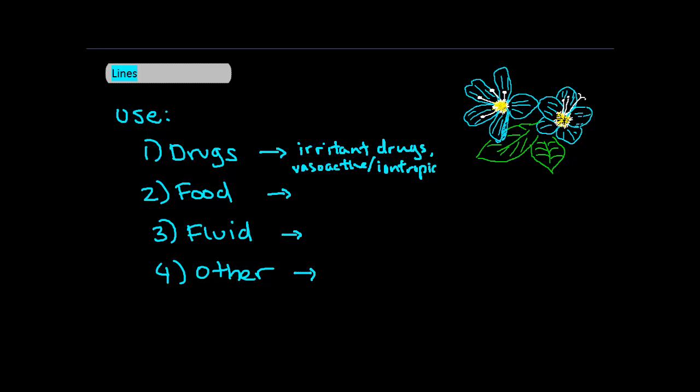Now next for food. Sometimes you'll see central lines used for TPN, usually PICC lines, which we'll talk about later. Fluid resuscitation. And the other category includes hemodialysis or plasmapheresis, when you have poor access peripherally, or for measurement of central venous pressure.